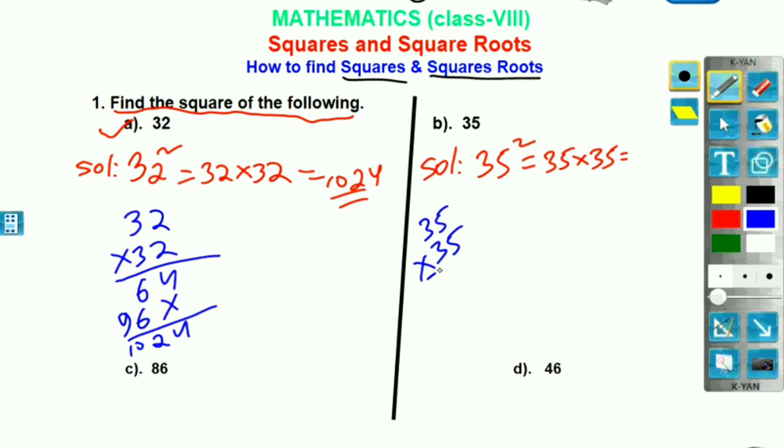Okay, carry 2. 5 threes are 25. 25, write 5. Carry 2. 5 threes are 15. 16, 17. Add 2 to get 17. This is our answer. 3 fives are 15. 15, write 5. Carry 1. 3 threes are 9. Add 1 to get 10.